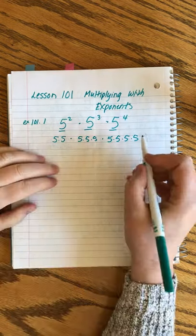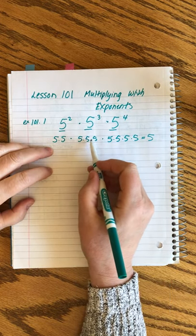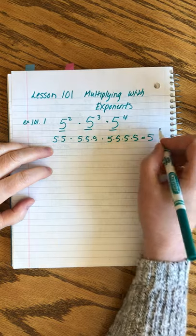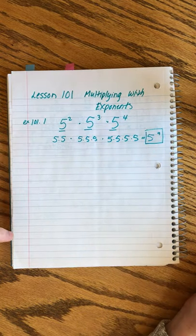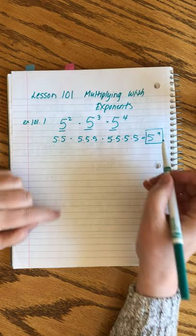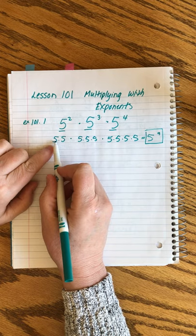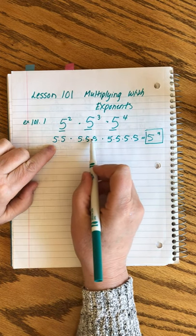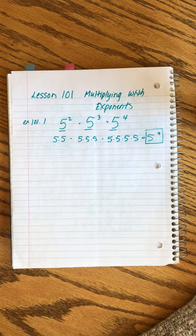The exponent stands for how many times you multiply the base against itself. We know that, but I'm just reminding you. So if we're multiplying these together, we're multiplying 5 times itself 1, 2, 3, 4, 5, 6, 7, 8, 9 times. The answer is 5 to the 9th power. And we're not going to calculate that, but what's important is we understand how we got that 9th power. And it was from figuring out how many times we were actually multiplying 5 together.